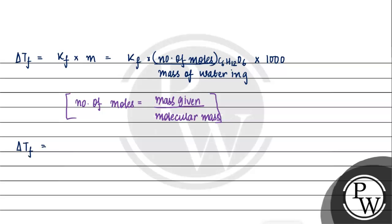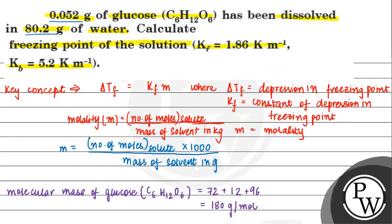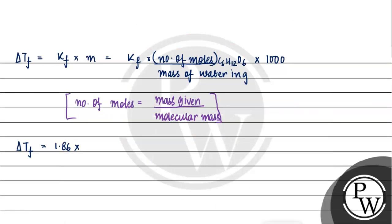Delta Tf equals Kf equals 1.86. So now we will put in number of moles. We have mass given as 0.052. Now we will put 0.052 into 1000 divided by molecular mass of glucose, 180, and we have water given, 80.2.